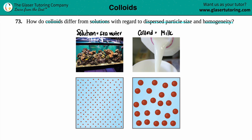We have two different substances interacting. For solutions, you'll always have a solute and a solvent. The solvent is the much bigger amount, represented by the blue background — in this case, the water in seawater. The solute is the red dots, which in this scenario would be NaCl. So seawater is NaCl in H2O.